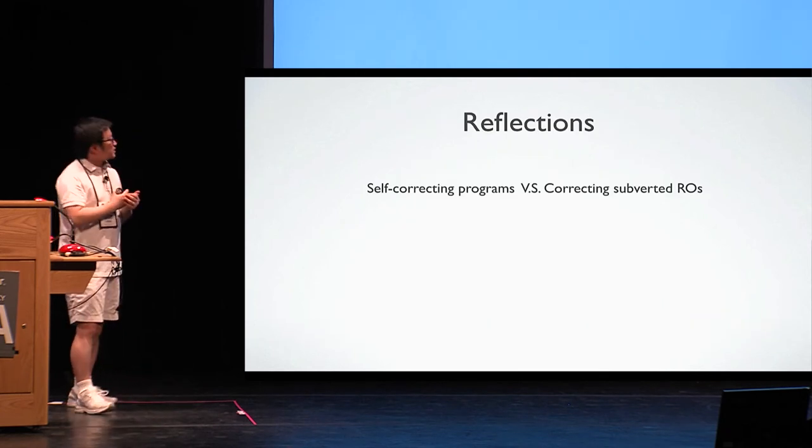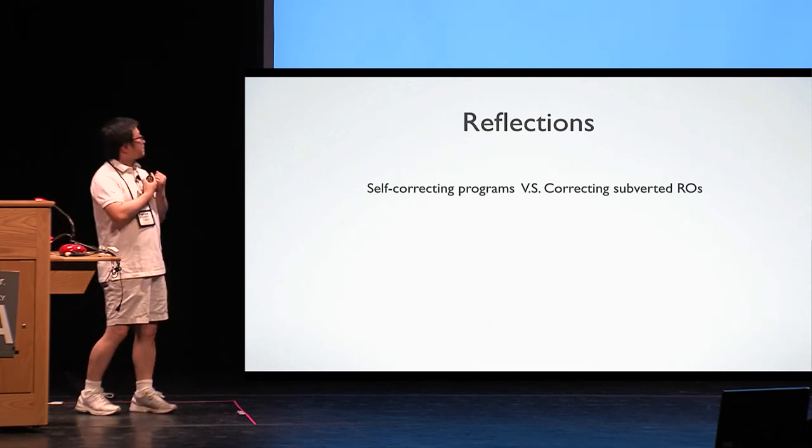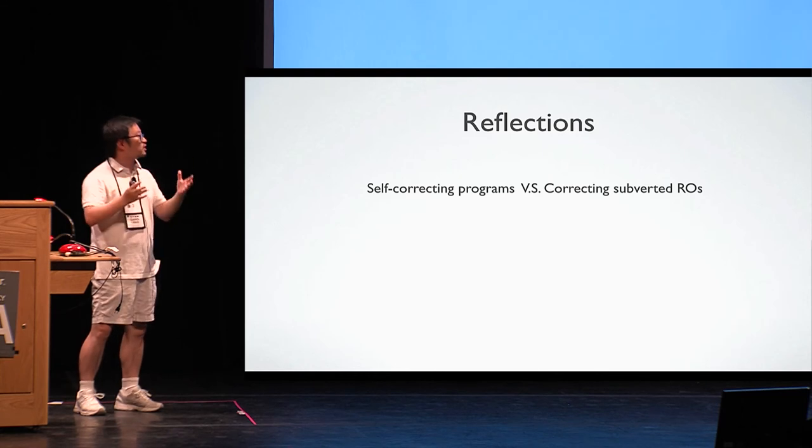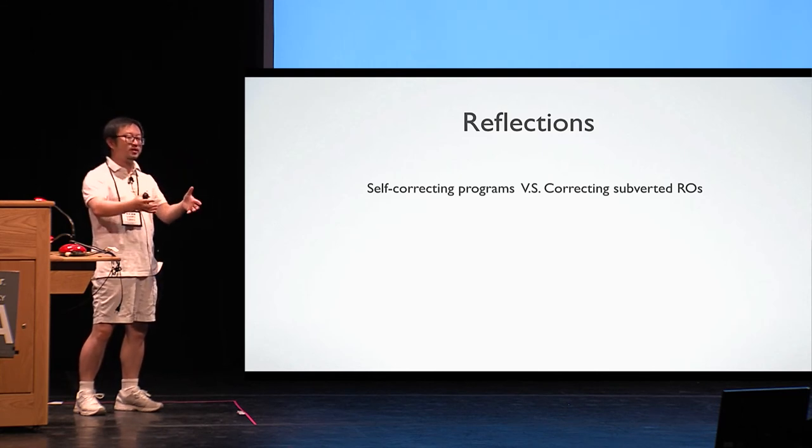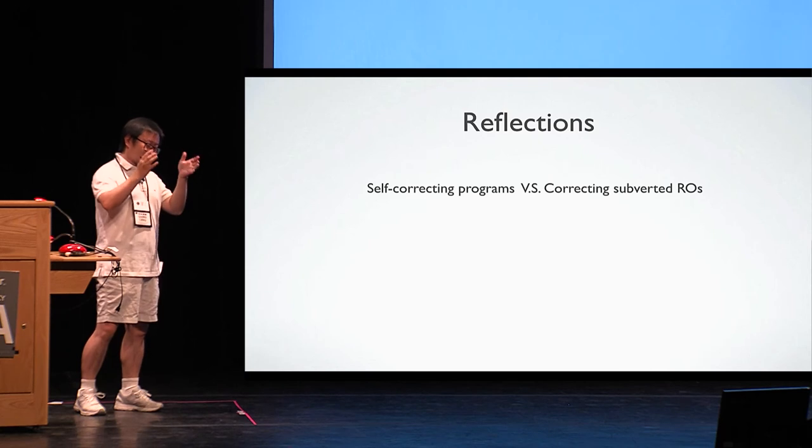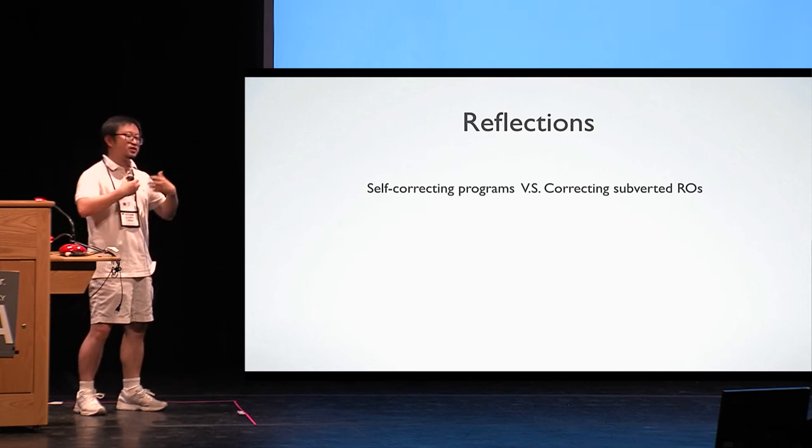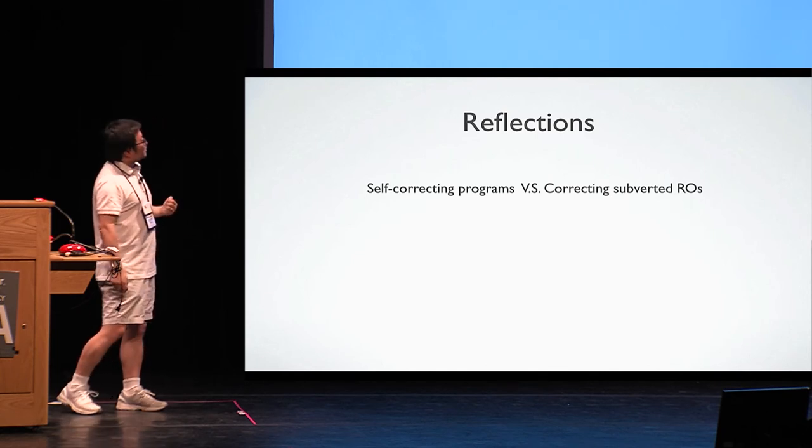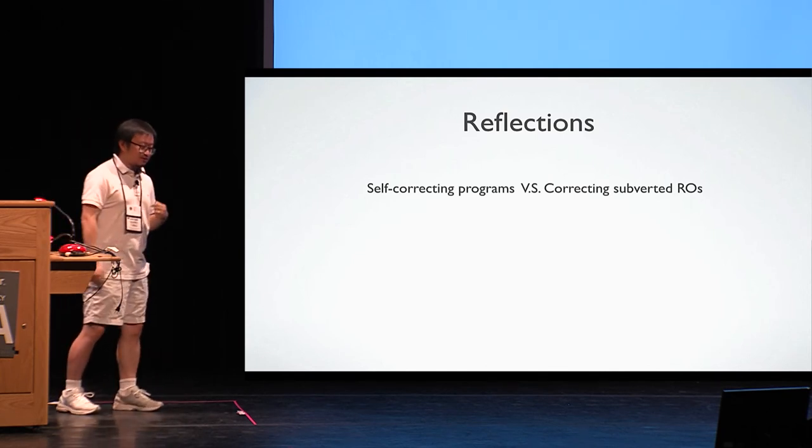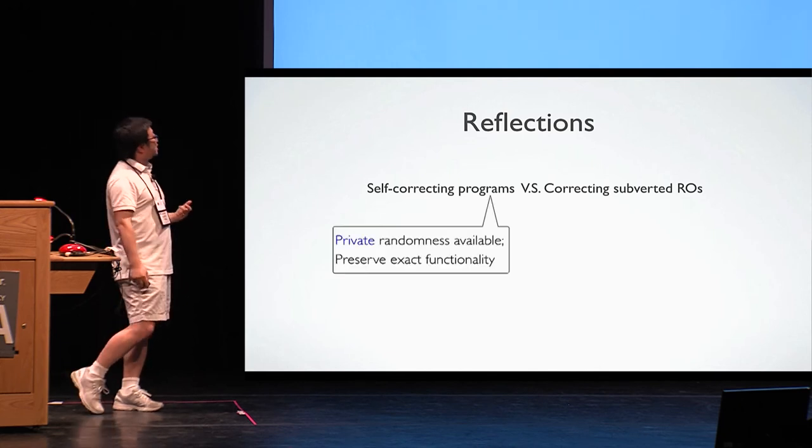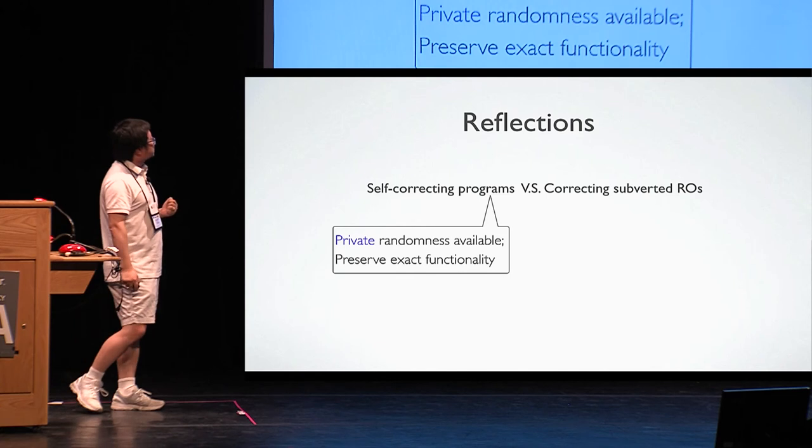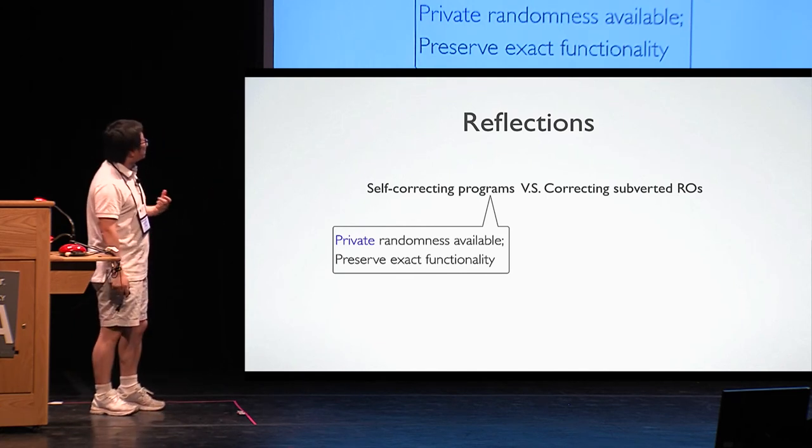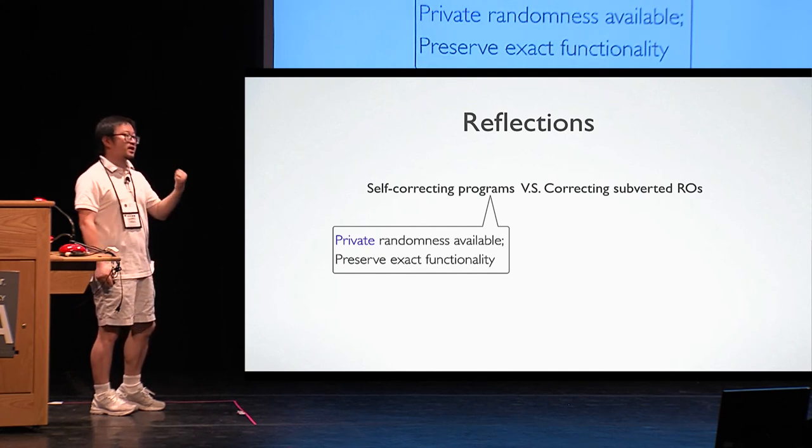And many more immediate applications when we replace malicious implementation. And I would like to end the talk with a very simple reflection. So it seems a lot similar to a classical result called self-correcting programs. Well, there takes a faulty program, try to correct it, that is, errors at the small fraction of input, we want to turn it to be correct, with almost correct at every input. While here, we also have a hash function which is going to be incorrect at a small portion of input. But there are subtle differences. First, in self-correcting programs, we are allowed to use private randomness.